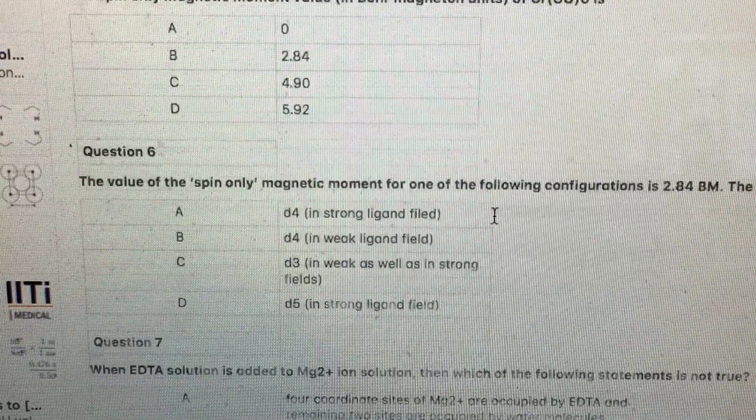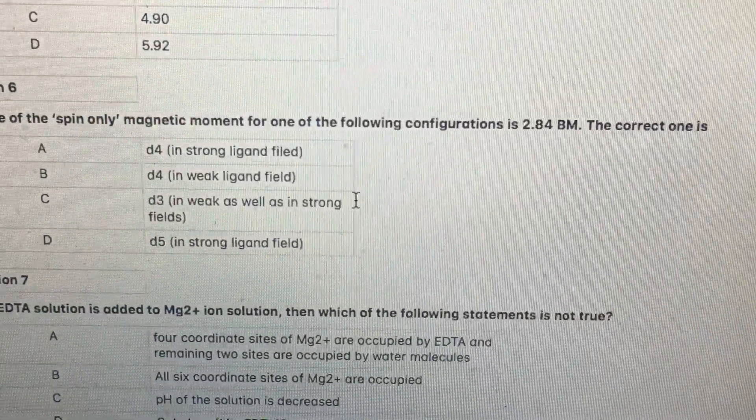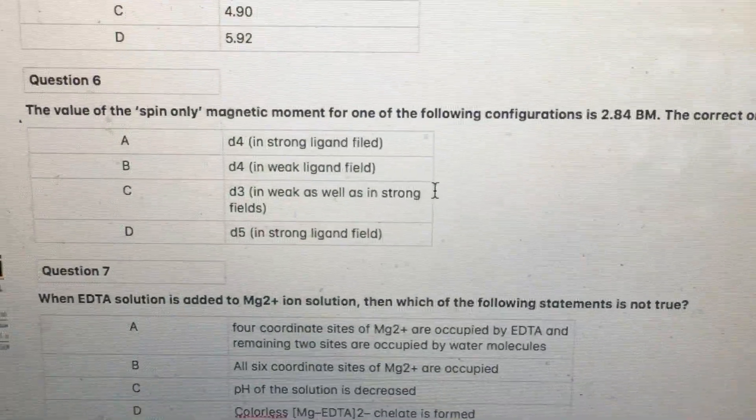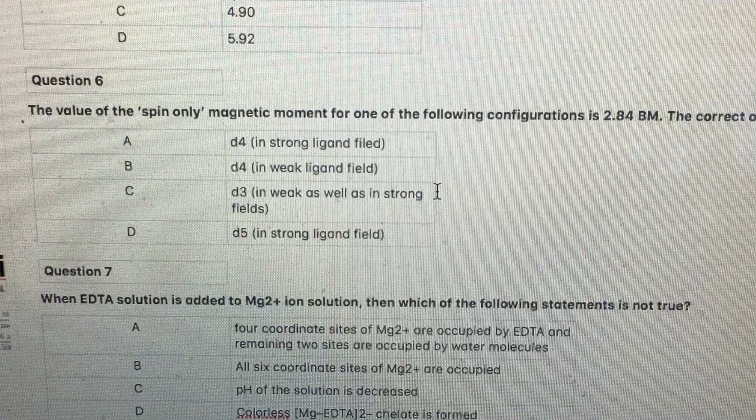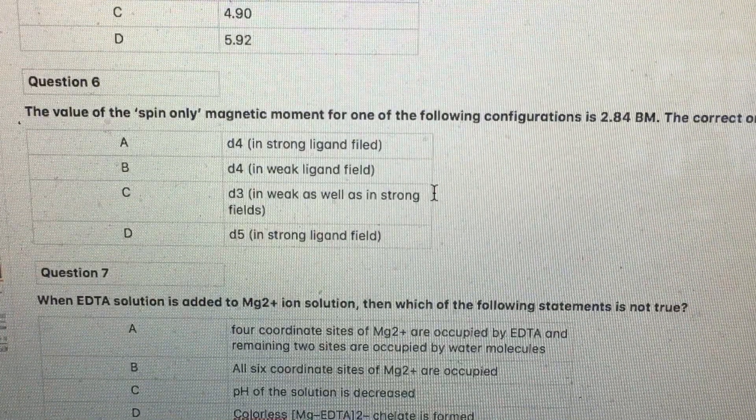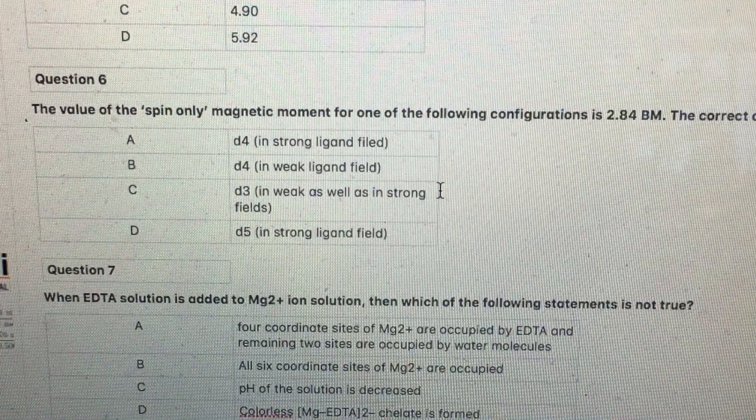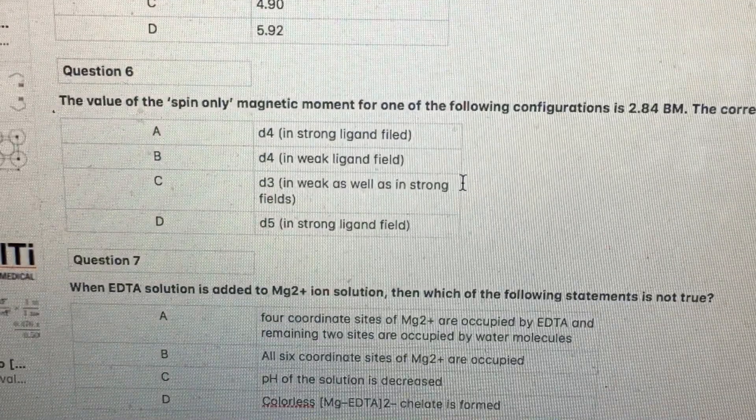The value of the spin-only magnetic moment for one of the following configurations, 2.84 BM, indicates that there are two unpaired electrons. Two unpaired electrons in strong field ligand must be like d4, because t2g4 indicates one electron pair and two unpaired electrons.